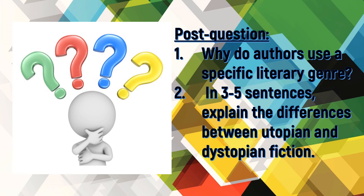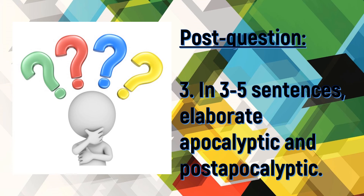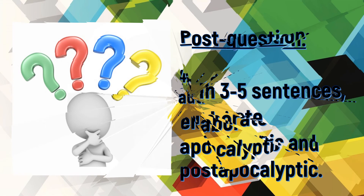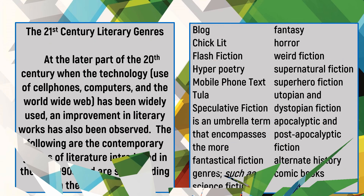Out of the 21st century literary genres we have identified, I want you to reflect on the following questions: Why do authors use a specific literary genre? In 3 to 5 sentences, explain the differences between utopian and dystopian fiction. In 3 to 5 sentences, elaborate on apocalyptic and post-apocalyptic literature and get more examples to establish the solid difference between the two. As a literary author, what one essential factor would you consider in choosing a literary genre? Construct a reflection in 2 to 3 sentences.